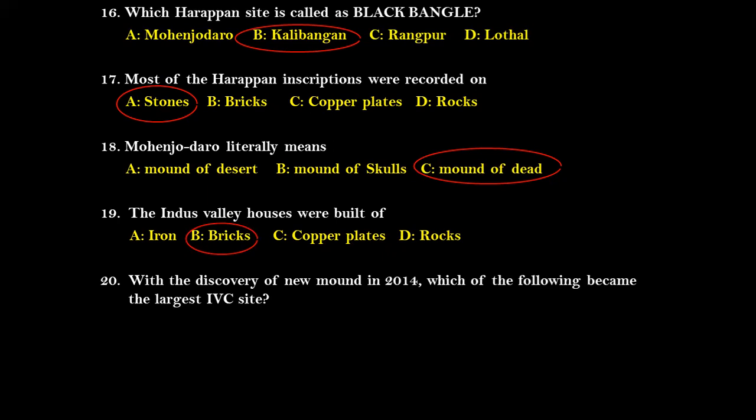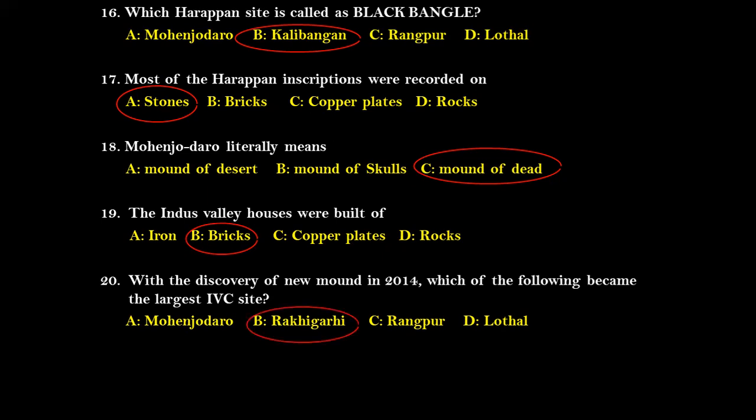Question twenty: With the discovery of a new mound in 2014, which site became the largest Indus Valley site? Options are Mohenjo-Daro, Rakhigarhi, Rangpur, and Lothal. The right answer is Rakhigarhi. Until 2014, Mohenjo-Daro was the largest site, but after the discovery of a new mound, Rakhigarhi became the largest Indus Valley site. This is important for current affairs as well.